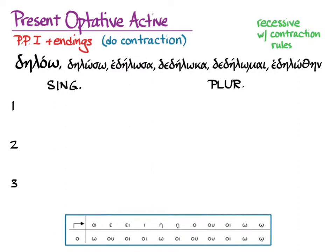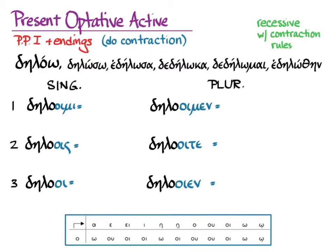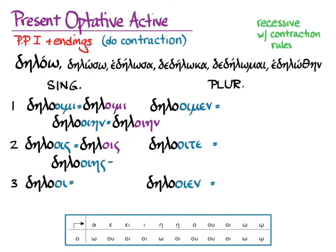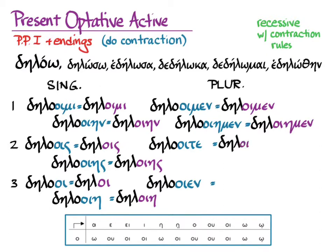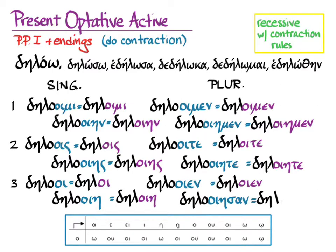Let's look at all of that with delao. There's our stem and the endings. They become: dēloimi or dēloiēn, dēlois or dēloiēs, dēloi or dēloiē, dēloimen or dēloiēmen, dēloite or dēloiēte, and dēloien or dēloiēsan. Recessive accent goes on the uncontracted forms, and finally on the contracted forms in this way.